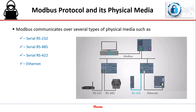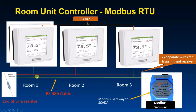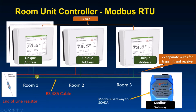Modbus communicates over several types of physical media, with serial RS-485 being the most popular method used. For example, in a hotel with several air conditioners, from a main computer we can control each air conditioner by giving a unique address to each one. We can see two communication lines A and B connected in parallel with each AC — one wire transmits data while the other receives data. A Modbus Gateway is used for data conversion between different types of Modbus devices and media, and this is a typical setup in any industry.